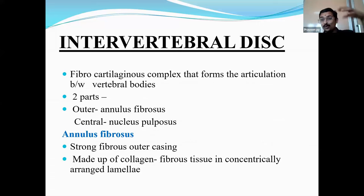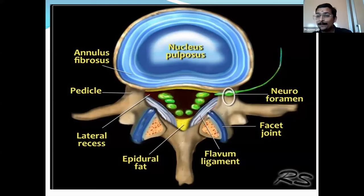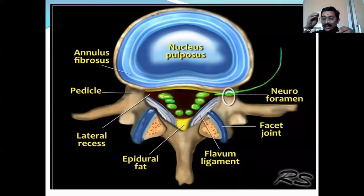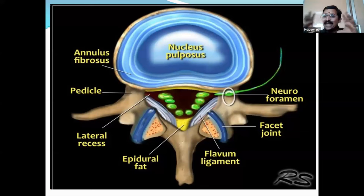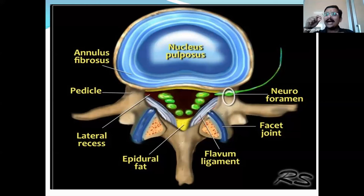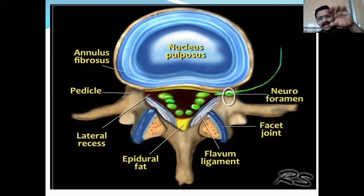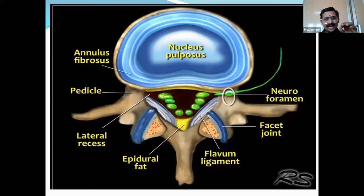The intervertebral disc consists of nucleus pulposus and annulus fibrosus. There are many proteoglycans — protein components — present in the nucleus pulposus and annulus fibrosus. As age advances, these undergo degeneration, collagen deposition occurs, and they become more brittle and desiccated. With advancing age, degenerative disc disease and low back pain are the most common outcomes.